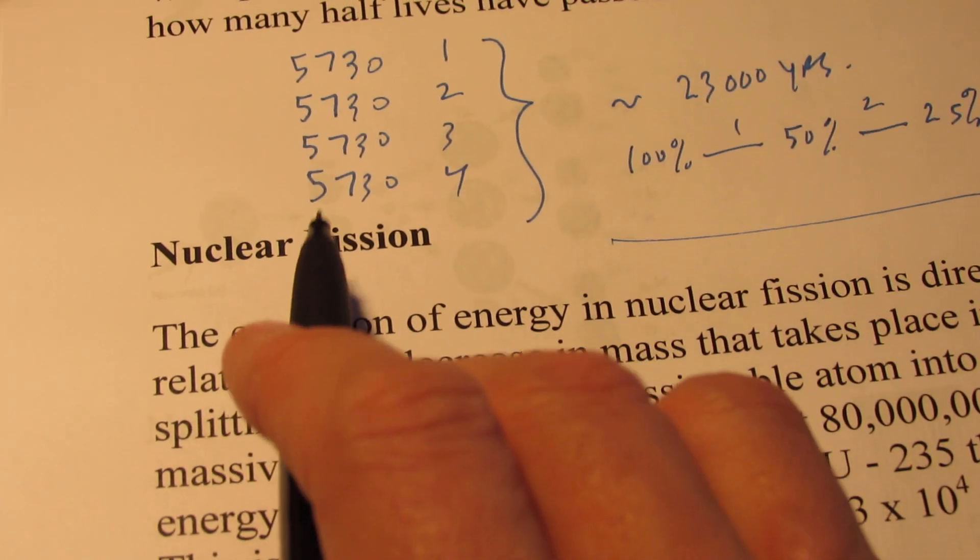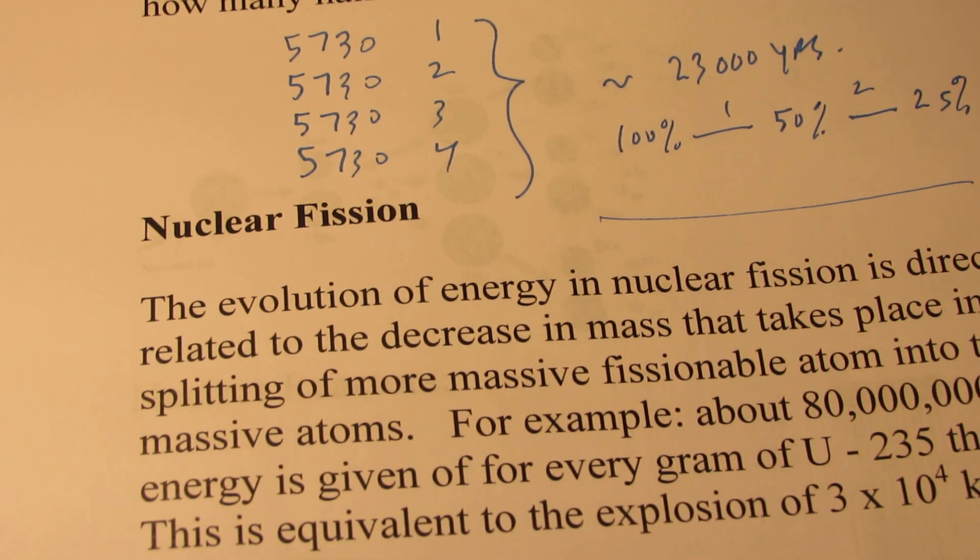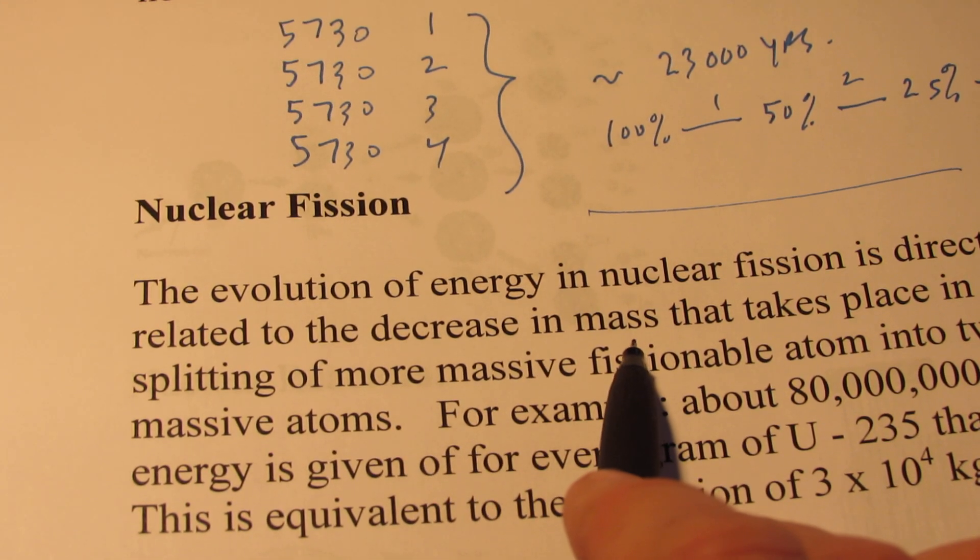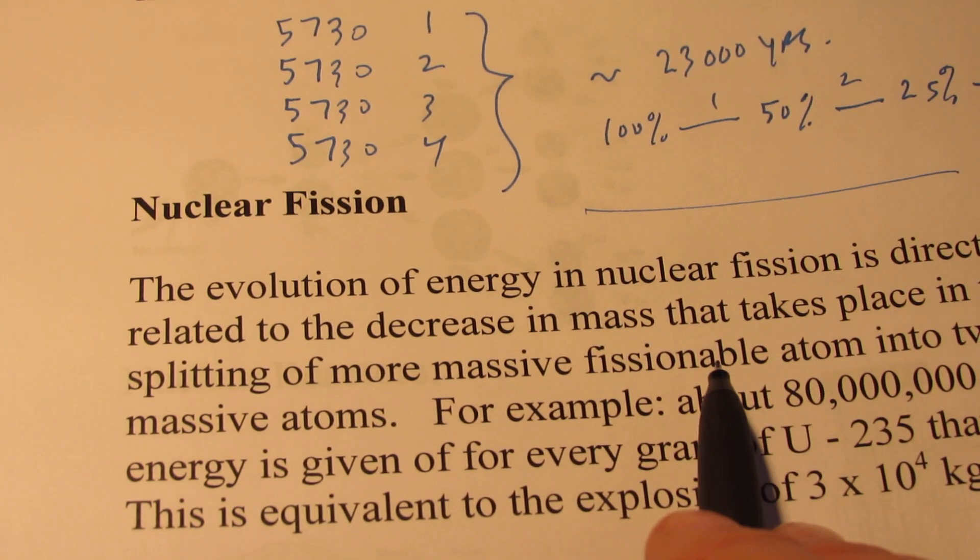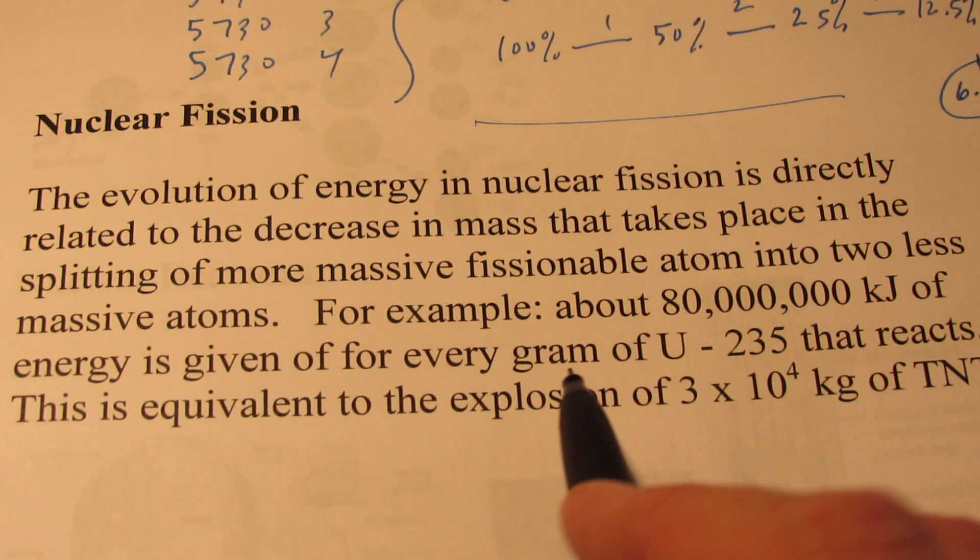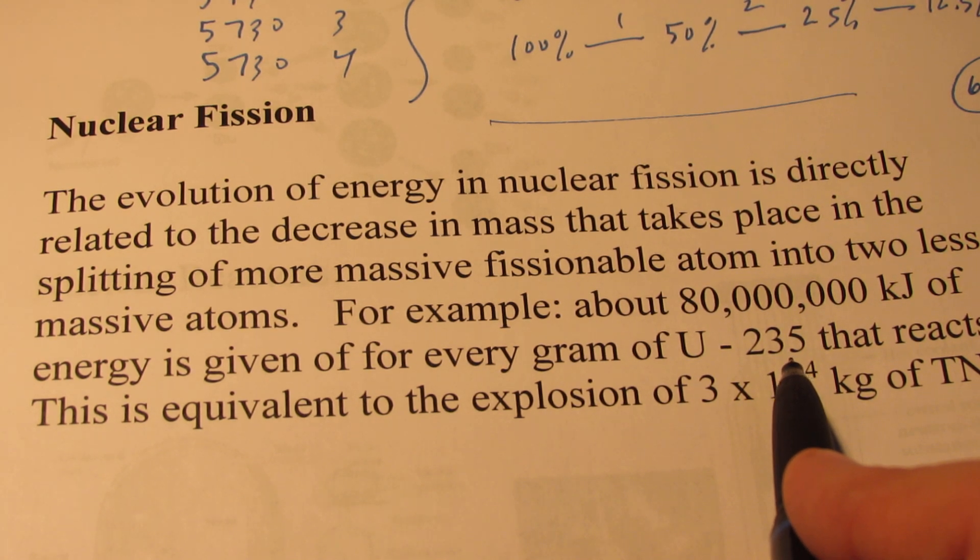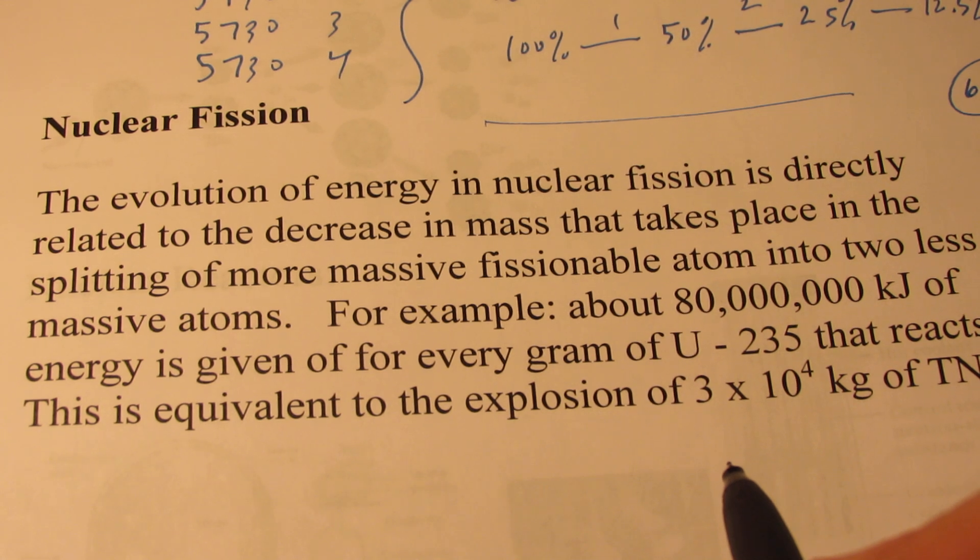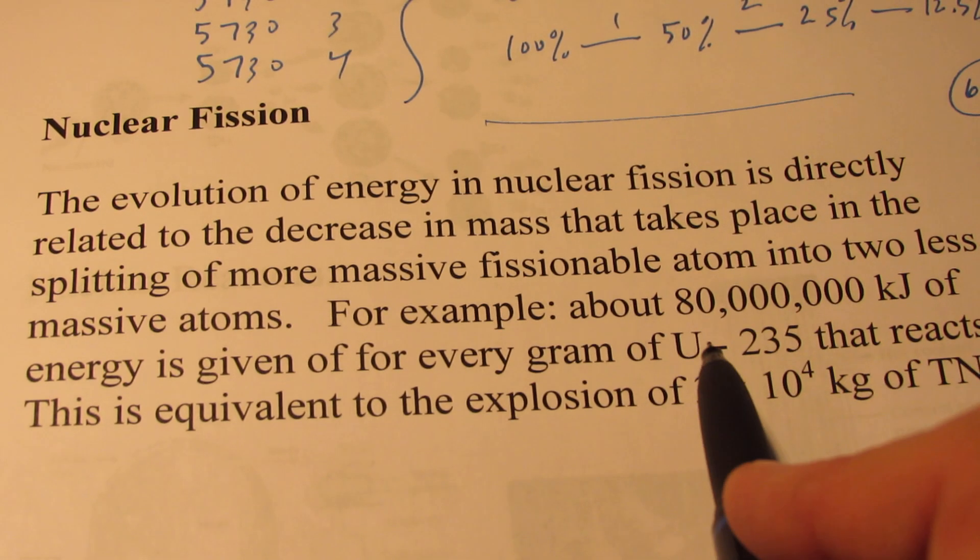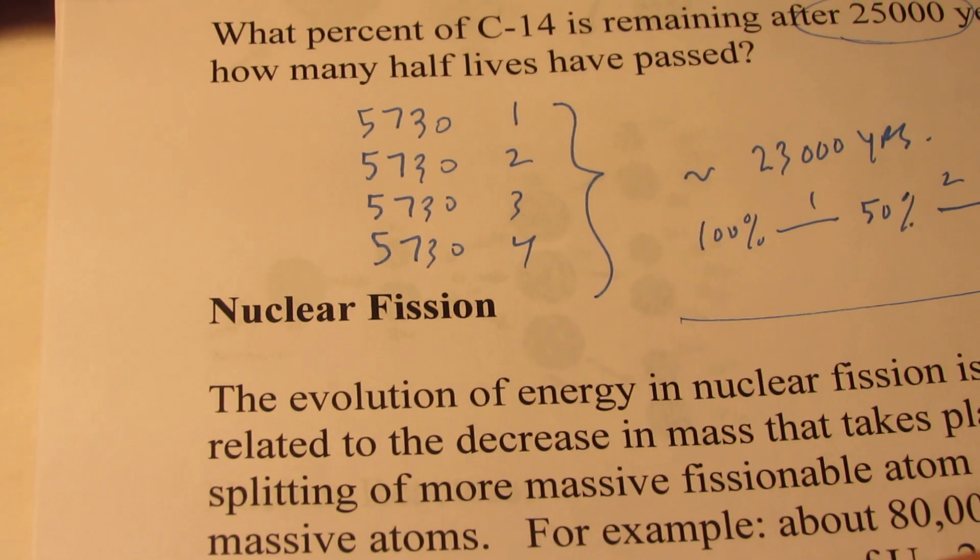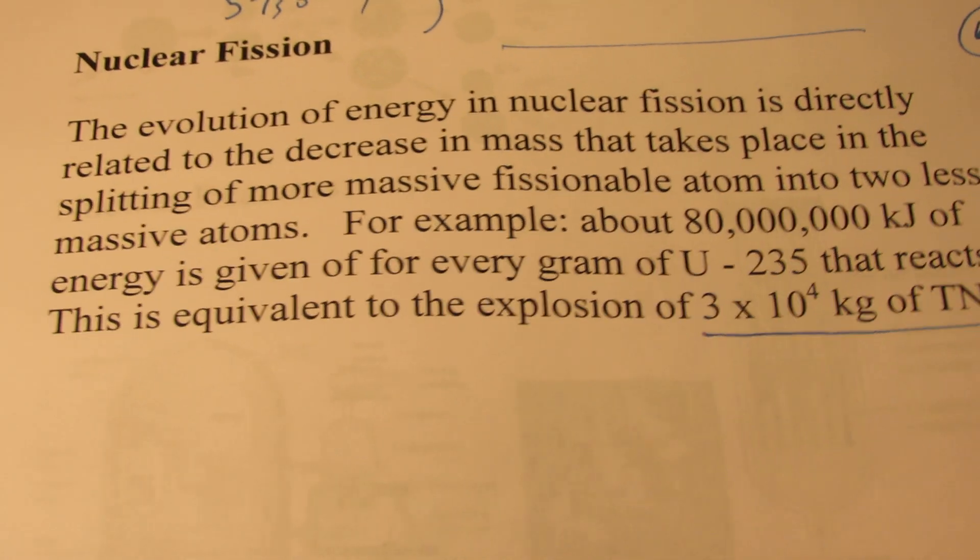The last thing I want to talk about is a process called nuclear fission. This is the evolution of energy through a nuclear fission process. It's directly related to the decrease in mass that takes place in the splitting of more massive fissionable atoms into two less massive atoms. For example, about 80 million kilojoules of energy is given off for every gram of uranium-235 that goes through this fission process. That's equivalent to the explosion of about 30,000 kilograms of TNT. That's quite amazing. A gram is about one-thirtieth of an ounce. One gram of uranium-235 going through this fission process yields that same amount of energy. That's what we're going to talk about in our last discussion on nuclear chemistry. That's something for you to look forward to. Thanks.